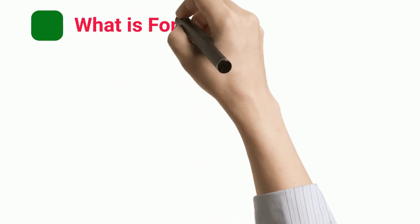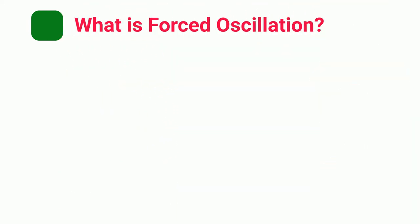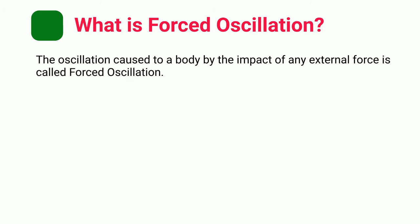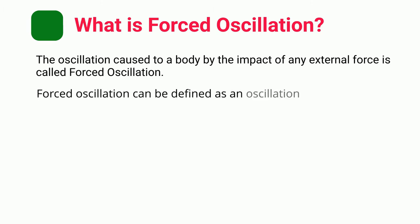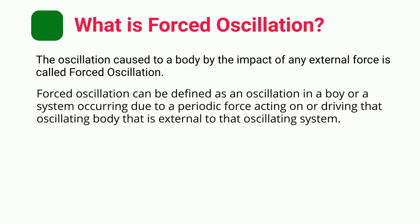What is Forced Oscillation? The oscillation caused to a body by the impact of any external force is called forced oscillation. Forced oscillation can be defined as an oscillation in a body or a system occurring due to a periodic force acting on or driving that oscillating body that is external to that oscillating system.